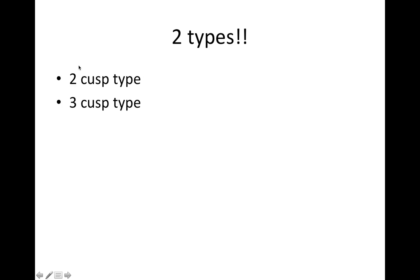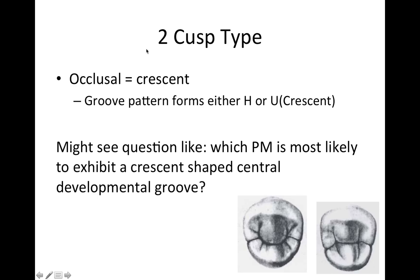There are two types: a two-cusp type and a three-cusp type. The two-cusp type from an occlusal may be described as a crescent — the groove pattern will form either a U shape or an H shape. You might see a question like: which premolar is most likely to exhibit a crescent-shaped central developmental groove? That's going to be the mandibular second premolar.